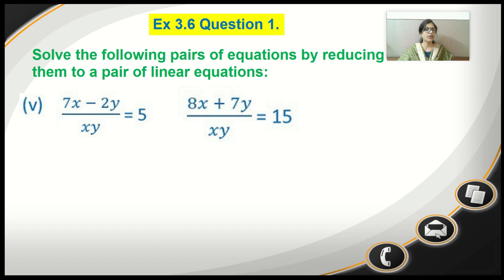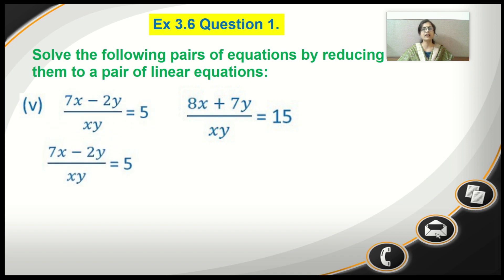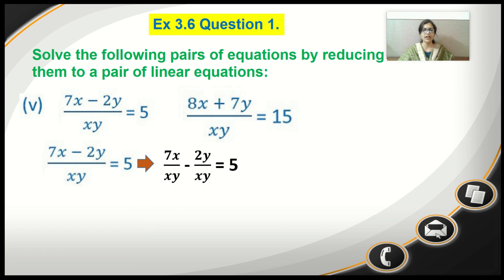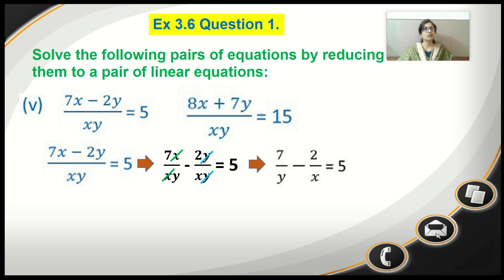Let's consider the first equation: 7x minus 2y upon xy is equal to 5. We will separate every term keeping the denominator the same. So we write 7x upon xy minus 2y upon xy equals 5. We can cancel x in the first term and y in the second term, leaving us with 7 upon y minus 2 upon x equals 5. Writing x first: minus 2 upon x plus 7 upon y equals 5. We number this as equation 1.